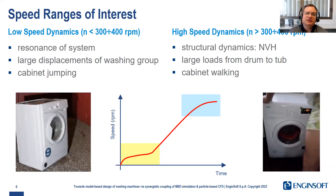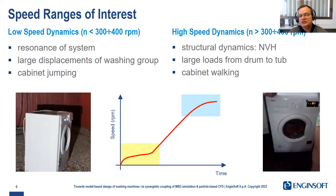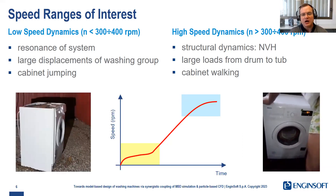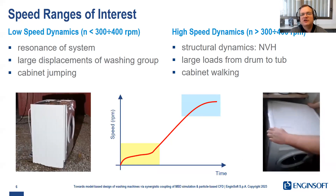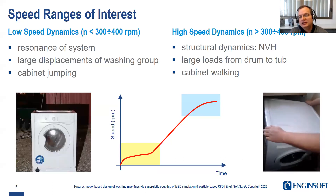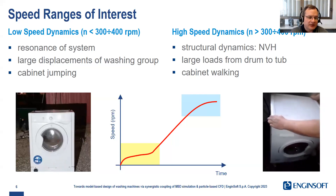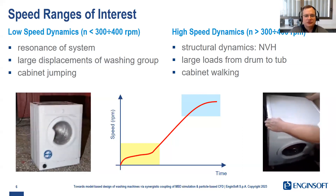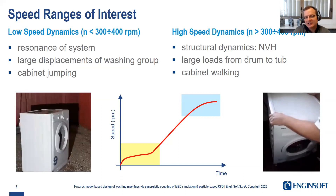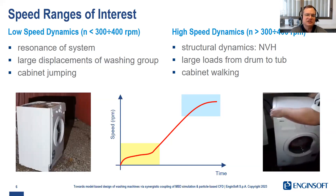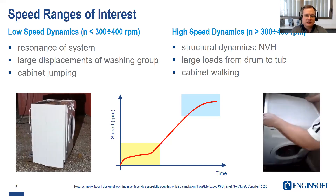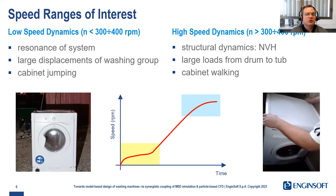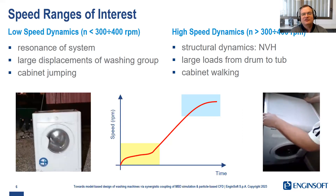Conversely, in the high-speed range — at the end of the spinning ramp — we want to reduce the noise, we want to reduce the vibrations, also because vibrations are responsible for a walking attitude of the cabinet, because it seems to slide on the floor. These are different requirements: low speed and high speed requirements. And for the designers, the goal is to meet both.